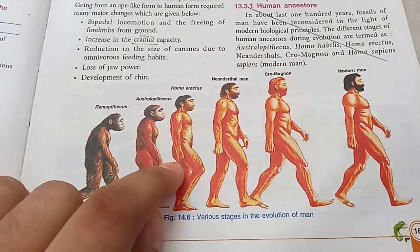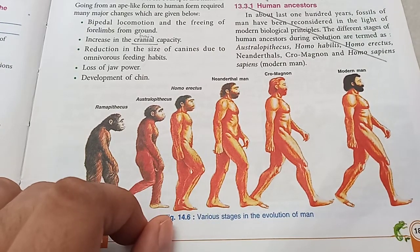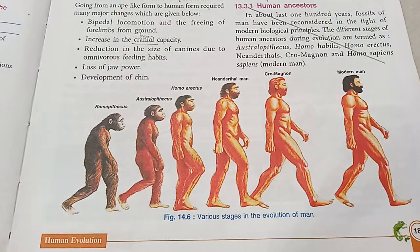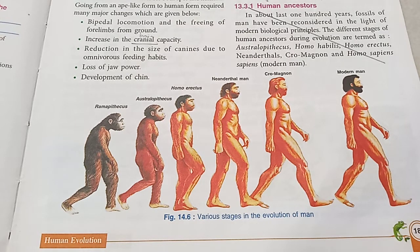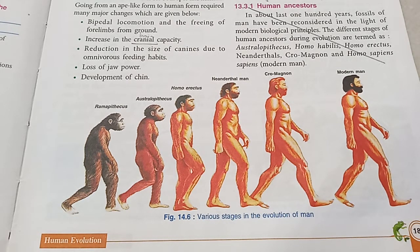Standing erect freed up their forearms. A bigger brain made them more intelligent, so they were able to escape the predators. They could make tools, they could make fire, they could survive better and reproduce more. So these changes were advantageous and they were carried forward to their children and their children's children. Today the modern man is at the peak of evolution. A million years from now, how we will look is anybody's guess.